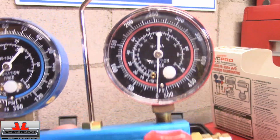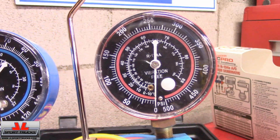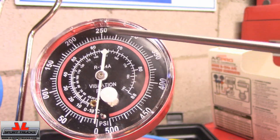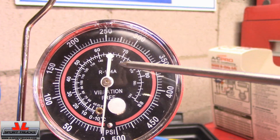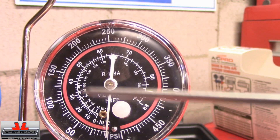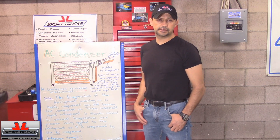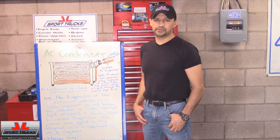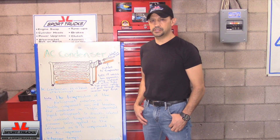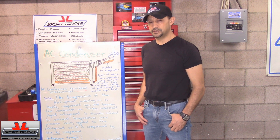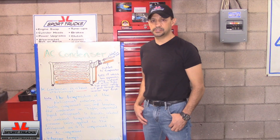Here's a manifold gauge set for R134A. We're going to focus on the high pressure side. When you change the pressures on the refrigerant, it's also going to affect the temperature. Now you know how the AC condenser works. If you want to stay up to date on upcoming videos, make sure you subscribe to our channel so you know when new videos come up. Thanks for watching today's video and we'll see you next time.